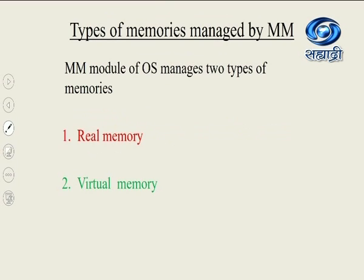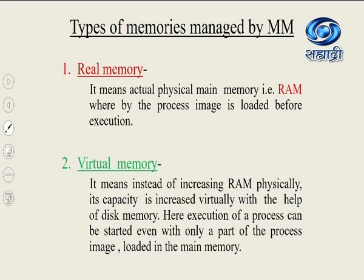Now let us see memory management in multiprogramming operating systems. In multiprogramming operating systems, multiple programs are loaded in the memory and the processor can execute them. The memory management module manages two types of memories: real memory — that is RAM, where the process image is loaded before execution — and virtual memory, where instead of increasing RAM physically, its capacity is increased virtually with the help of disk memory. Execution of a process can be started even with only a part of the process image loaded in the main memory. I will talk about virtual memory in detail later.